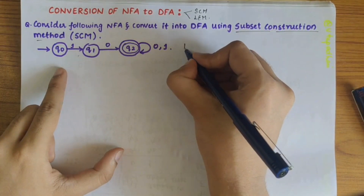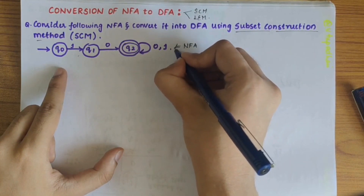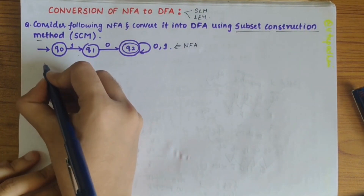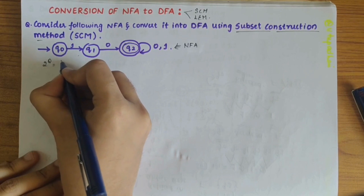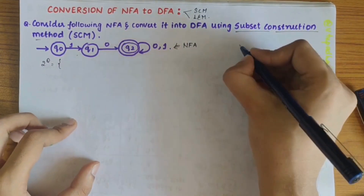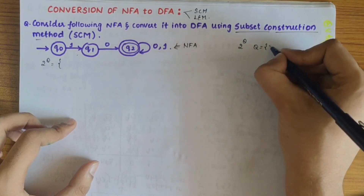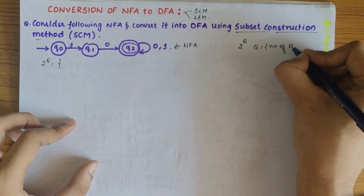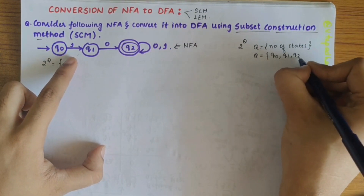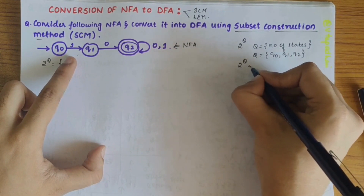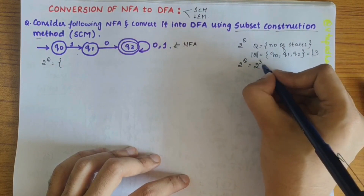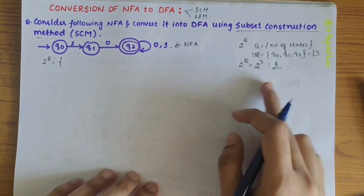This is the NFA given and we need to convert it into DFA. First we need to write the 2^Q values — that is the possible combinations which could be made from the given NFA. Here Q equals the number of states. Since Q comprises Q0, Q1, and Q2, the total number is 3, so 2^3 gives 8. There are totally 8 possible combinations.